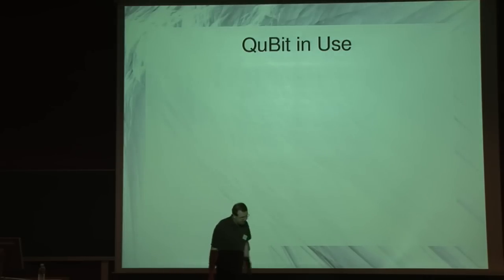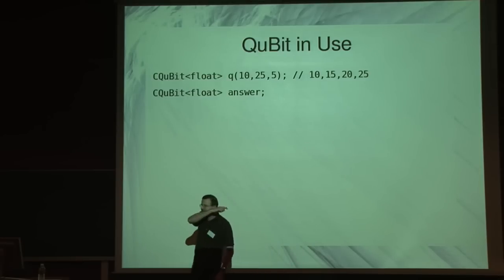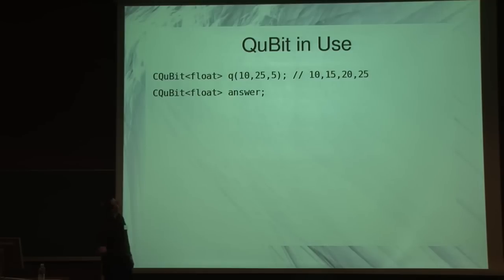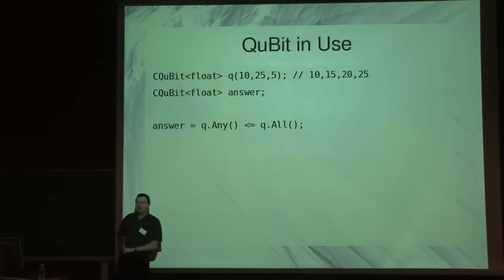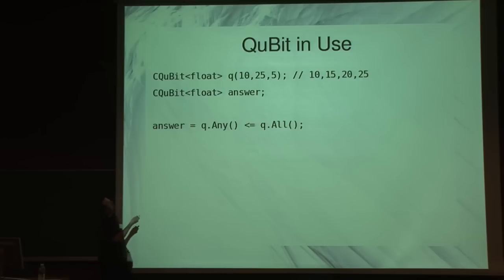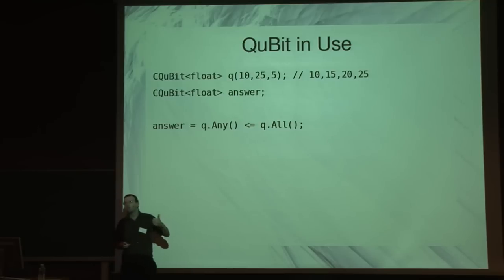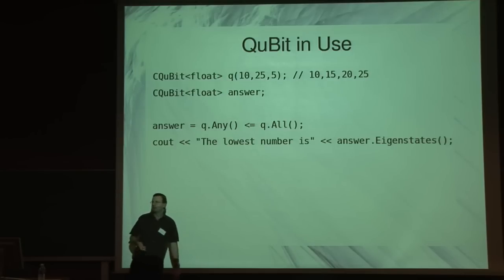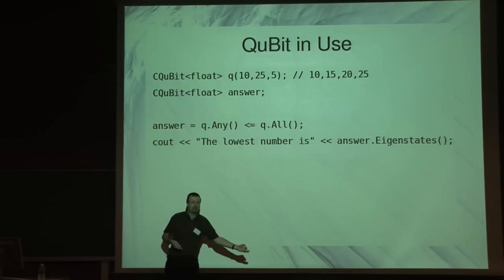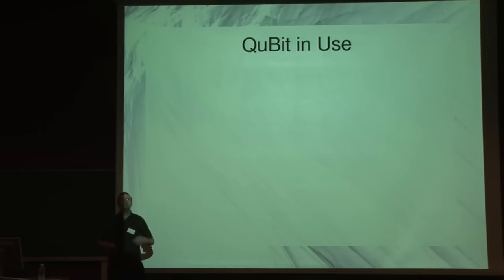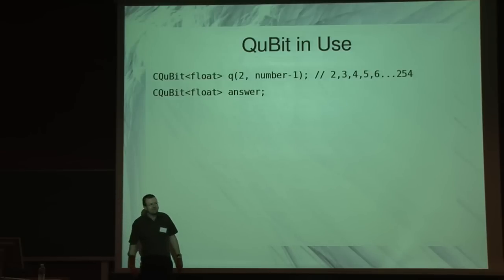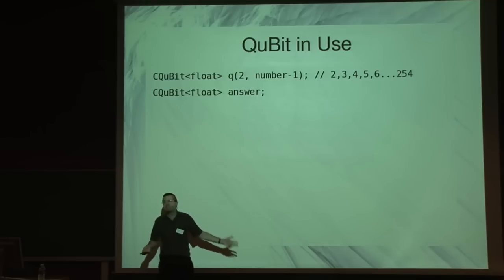We've had a look at various qubit things in use — I'm going to use the same numbers again, just because it makes my copy-and-paste job on the slides easier. 'Any' is less than or equal to 'all' — it looks a bit strange. What it actually means is: are any of these numbers less than or equal to all of these numbers? That's every combination. There's going to be one case and one case only where this is true — what is the case where any of those numbers is going to be less than all of the others? It's going to be the smallest. Using eigenstates, you can get out which number was the smallest — and that's how you can do min.